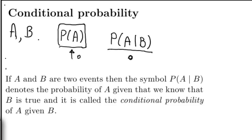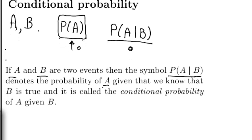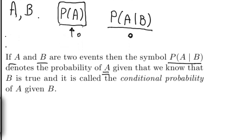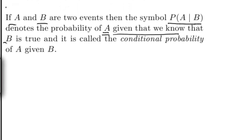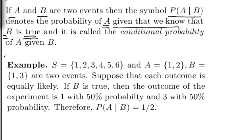Here's the definition. A and B are any two events. The symbol we use for the conditional probability P(A|B) is the probability of the event A given that we know that B is true.